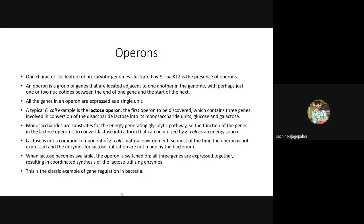All the genes in an operon are expressed as a single unit — if there are three genes in the operon, all three are expressed together. A typical E. coli operon example is the lac operon, also called the lactose operon, which you have studied in 12th standard. This was the first operon to be discovered, and it contains three genes involved in the metabolism of lactose into glucose and galactose, because lactose is a disaccharide.